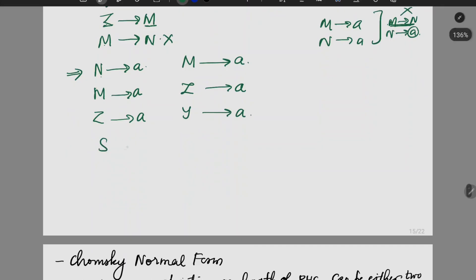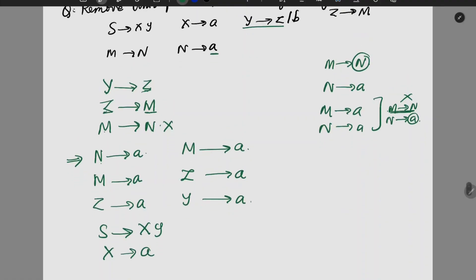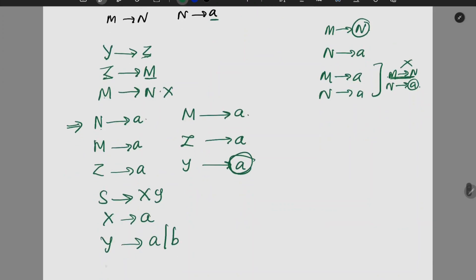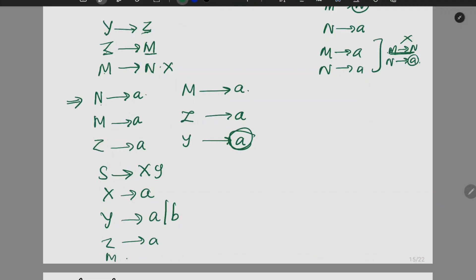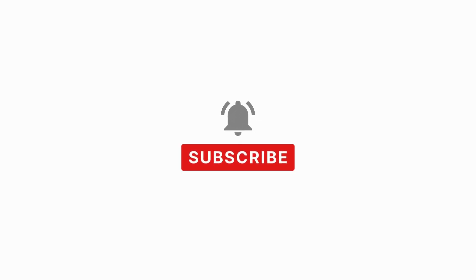So we can write: S gives XY, X gives A, Y gives A. Also Z gives A, M gives A, N gives A. Since Z, M, and N are no longer needed — they are useless productions — the final answer is: S gives XY, X gives A, Y gives A.